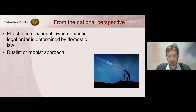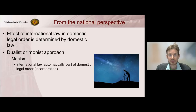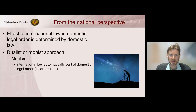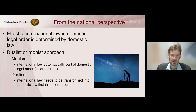A state has a choice of two approaches: a monist or a dualist approach. If a state chooses a monist approach, then international law is automatically incorporated into the domestic legal order. If a state adopts a dualist approach, then international law first needs to be transformed or transposed into domestic norms before it can be part of the domestic legal order.